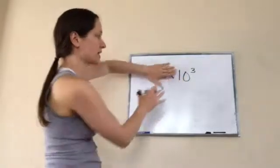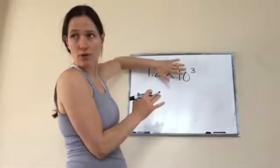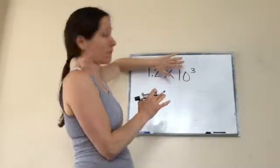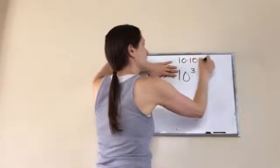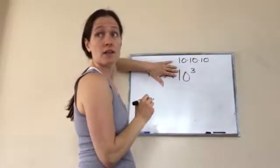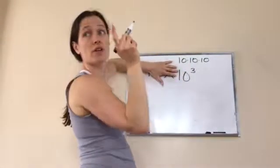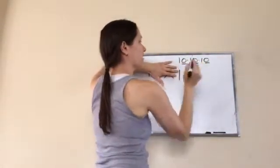Okay, what is 10 to the third power? Do you remember? What does that mean? 10 times 10 times 10. And so, 10 times 10 times 10. I think that's 30. No, that's 100. No. How many zeros does it have? 1,000. Right.